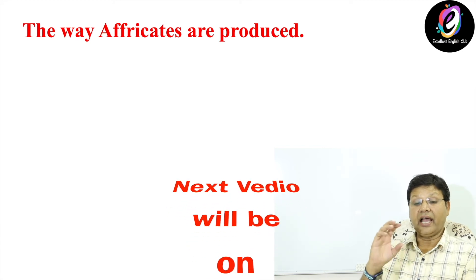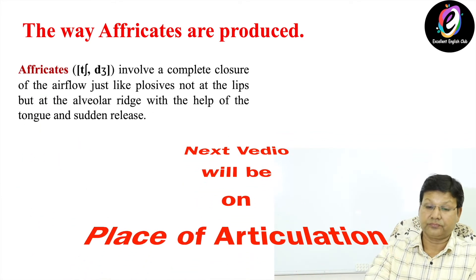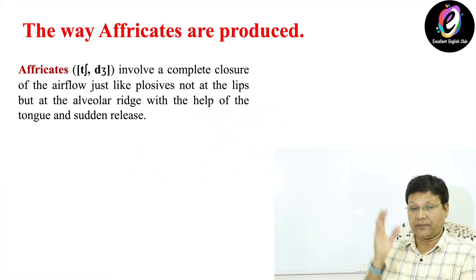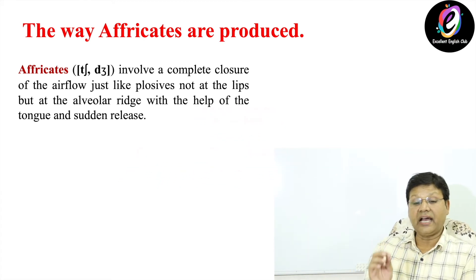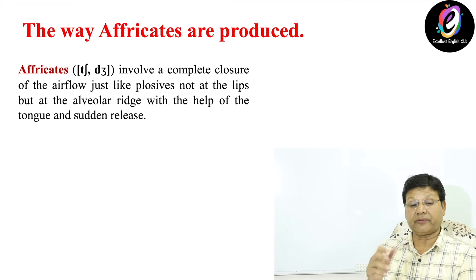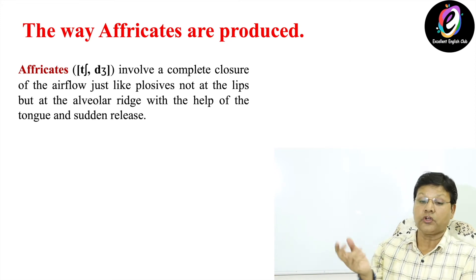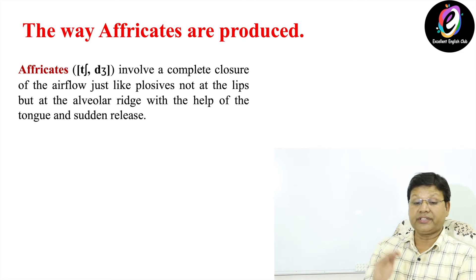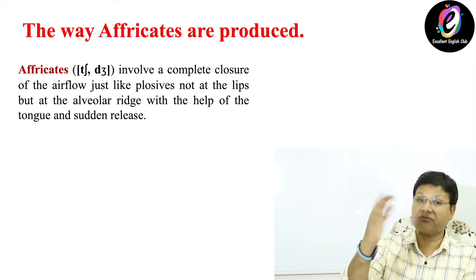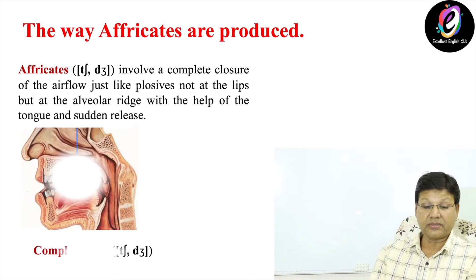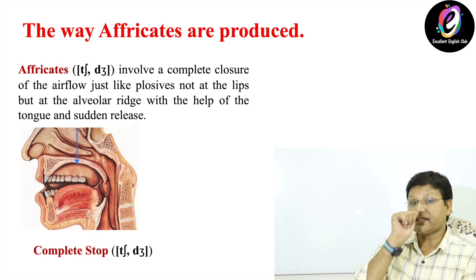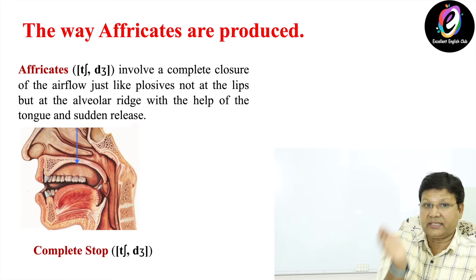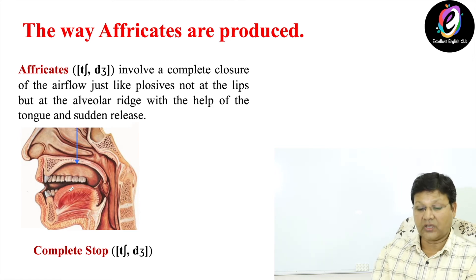The third manner is affricates: cha and ja — two sounds. Affricates involve a complete closure of airflow, just like plosives, but not at the lips — at the alveolar ridge, with the help of the tongue — followed by a sudden release. In the picture you can see the tongue is touching at the top and the air is stopped there, then suddenly released: cha.